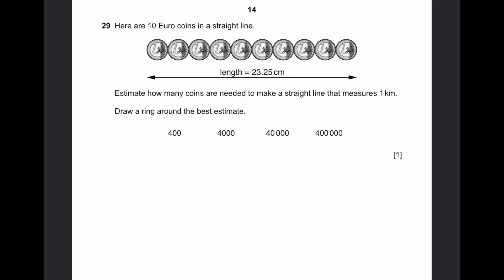Question 29. Here are 10 euro coins in a straight line. Estimate how many coins are needed to make a straight line that measures 1 kilometer. 10 euro coins measure 23.25 centimeters. 1 kilometer is 1,000 meters, which is 100,000 centimeters. This one can be written as approximately 25 centimeters, rounded to the nearest 5. If we do 100,000 divided by 25, that would be equal to 4,000 rows. And 4,000 rows of coins, which means 4,000 groups of 10 coins, that would be equal to 40,000 coins. This is an estimate, of course. And we can circle 40,000 here.